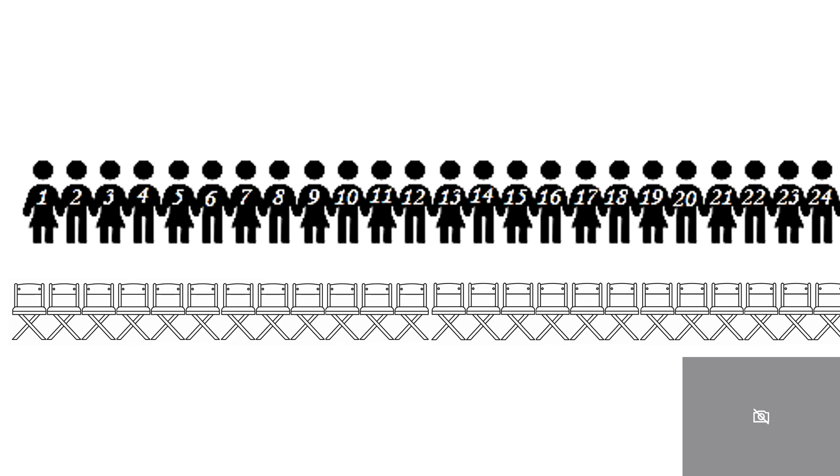Now all the people abide by one rule. They will not sit in a chair whose position is greater than their number. Person number five will not sit in a chair whose position is greater than five.